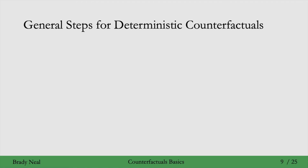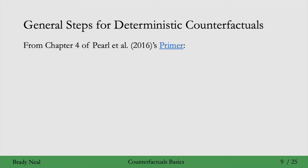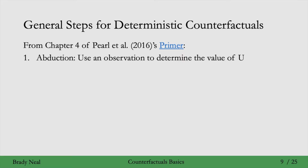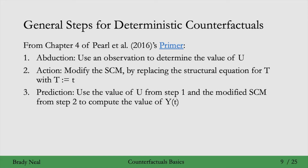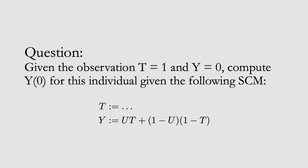What we did on the last slide was a specific example, but there are general steps for this — taken from chapter 4 of Pearl's Primer. The first step is abduction: we use an observation for an individual to determine that individual's value of u, and use this to get the person's individualized SCM. The second step is to modify that SCM by replacing the structural equation for t with the little t we're interested in for that potential outcome. The third step is to use the value of u from step 1 and the modified SCM from step 2 to compute the value of the counterfactual. This brings us to our first question: given the observation t equals 1 and y equals 0, compute the counterfactual y_0 for this individual given the following SCM.